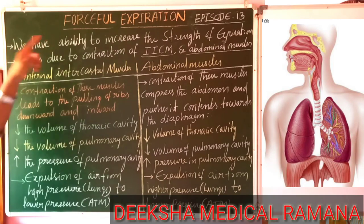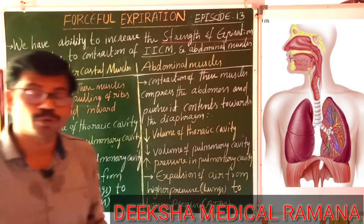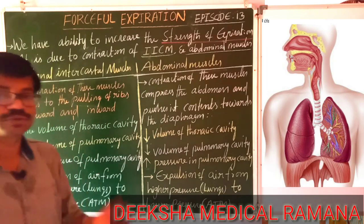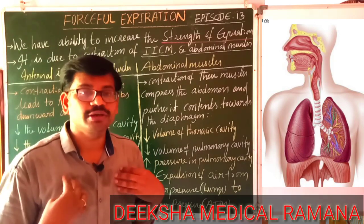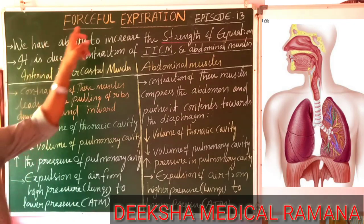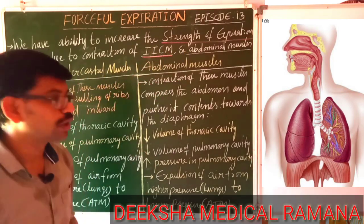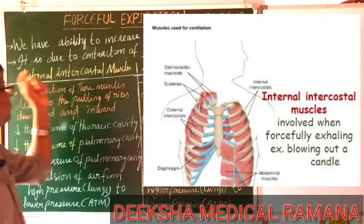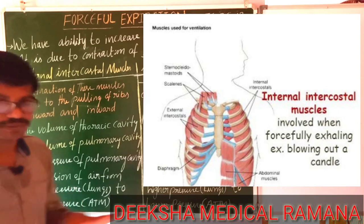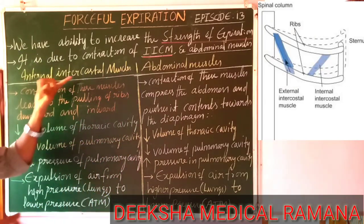Forceful expiration is required when you want to increase the strength of expiration. When you want to expire more air — when you go for exercises or vigorous activities — at that time we need more air, and we have the ability to expire more air. The two important muscles involved in forceful expiration are: internal intercostal muscles and abdominal muscles. If you see the picture you can understand where these muscles are present.